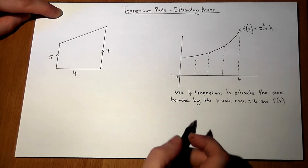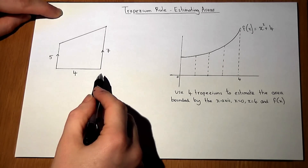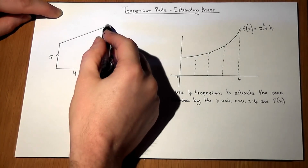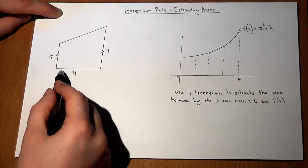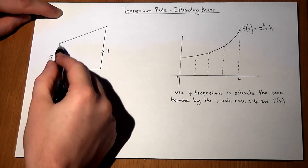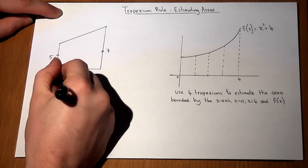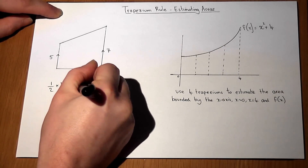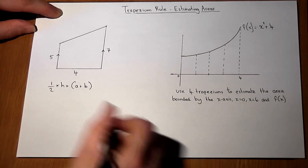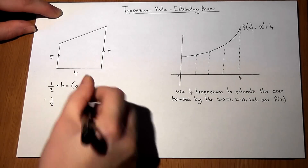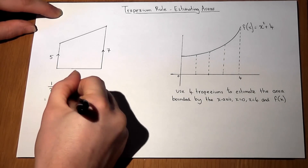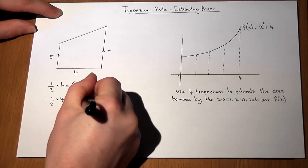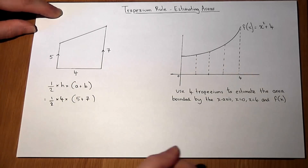If we want to define the area of a trapezium, we have two parallel sides and some distance between those two sides. The formula for the area is half times H times (A plus B), where H is the distance and A and B are the two parallel sides.